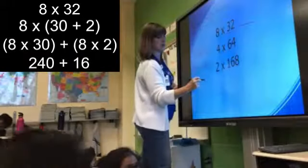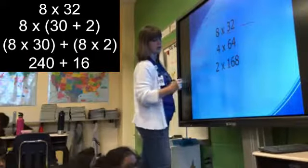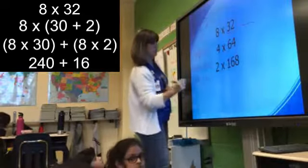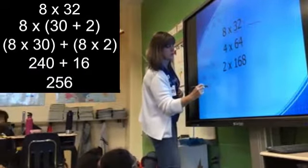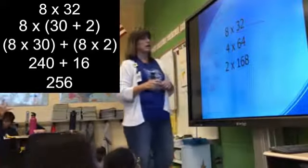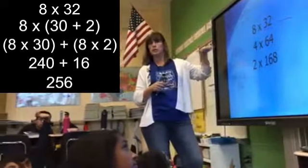And then what are you going to do with those partial products? Add them together, which makes 256. That's the distributive property we've been using in math. That's excellent.